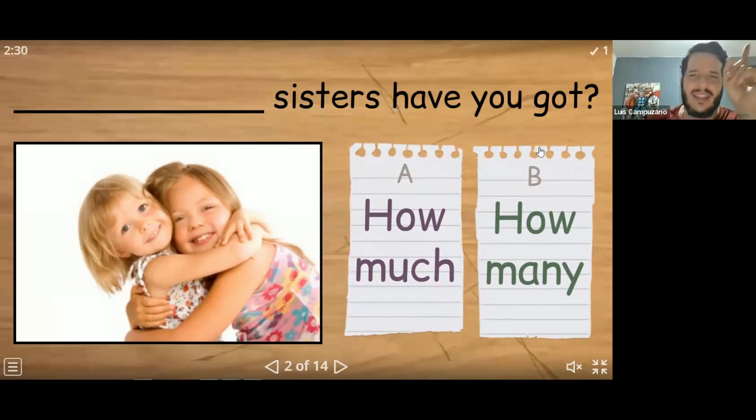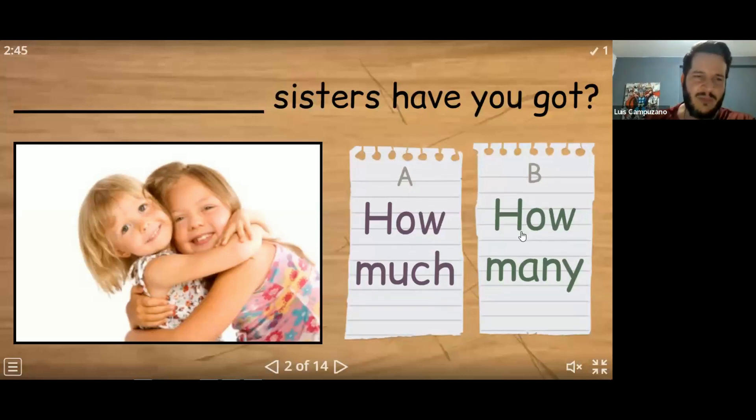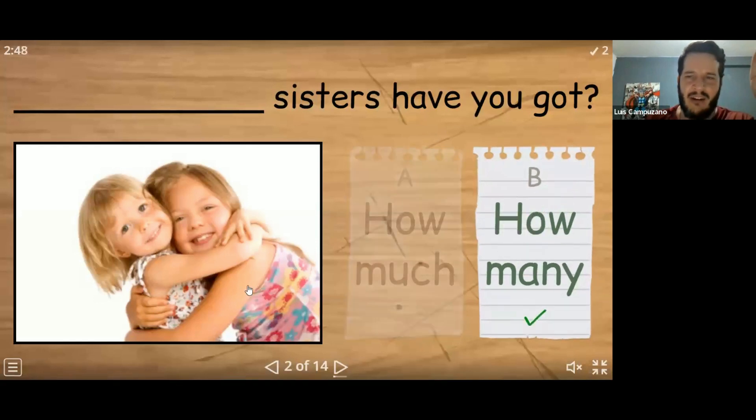Now, I must make a very short pause here. This have you got is very British. American English is more do you have. How many sisters do you have? And British is have you got? But it means the same thing. Very good. Caroline, we say how many sisters have you got is correct. Let's go to the next one.